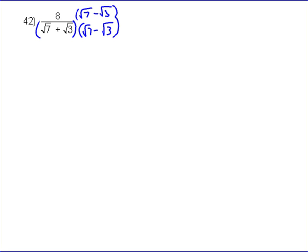So multiply the top together, you're just going to do the distributive property, so you're going to have 8√7 minus 8√3, and then that's going to be all over.